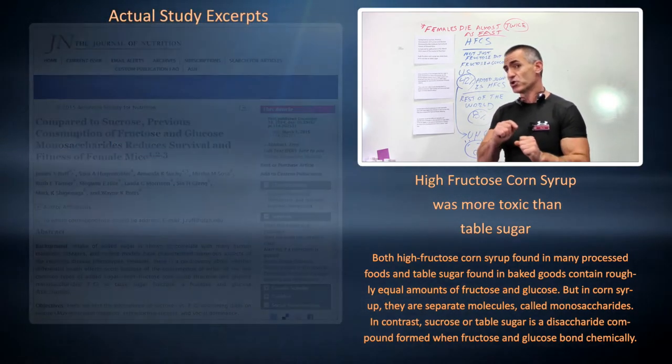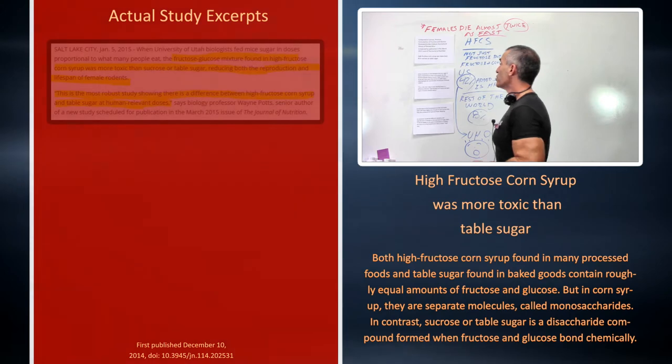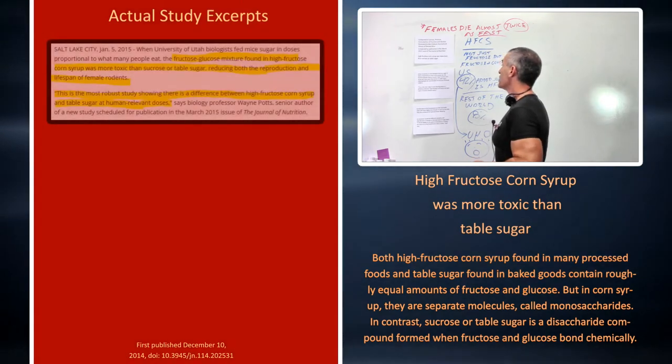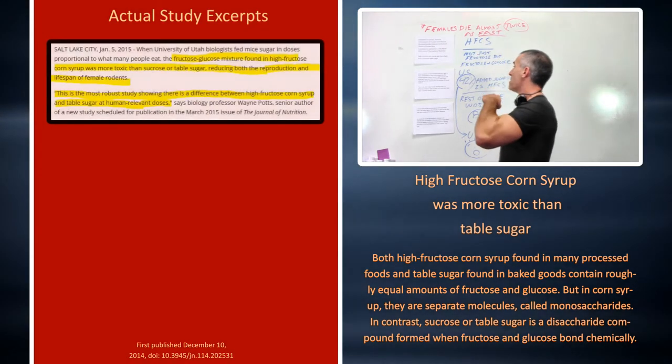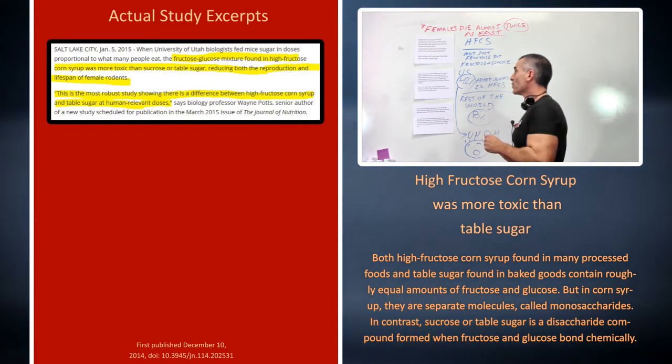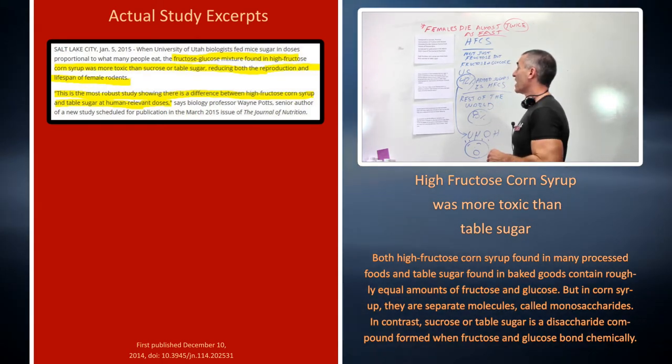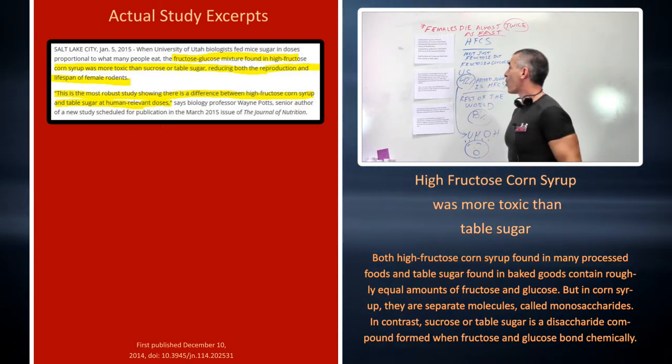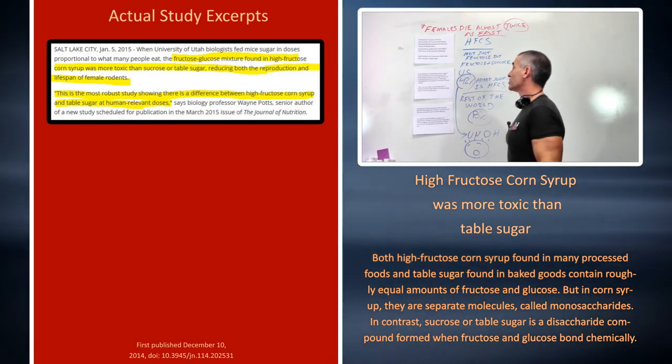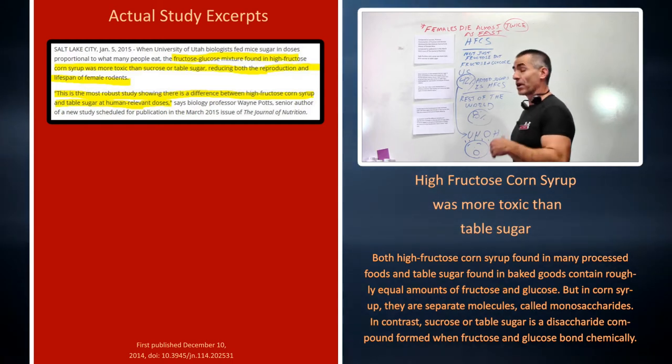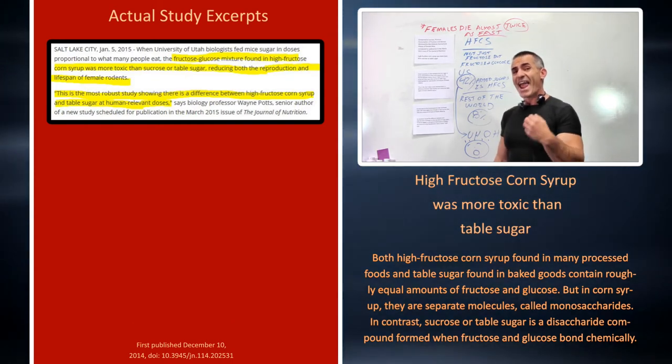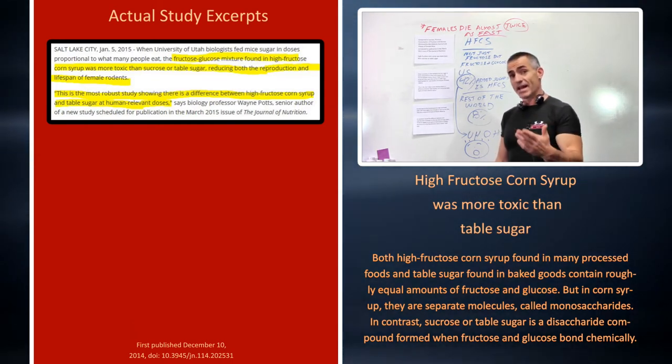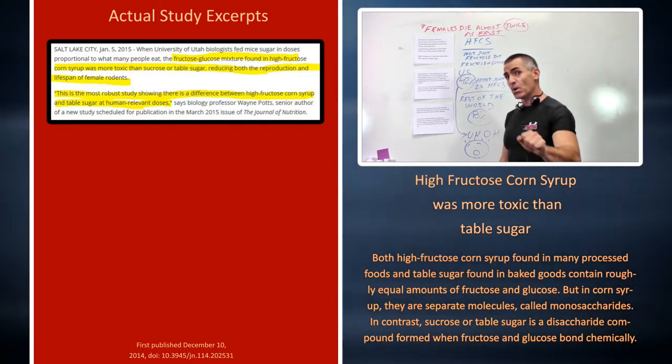When University of Utah biologists fed mice sugar in doses proportional to what many people eat, the fructose-glucose mixture found in high fructose corn syrup was more toxic than sucrose, i.e. table sugar, reducing both reproduction and lifespan in animals.